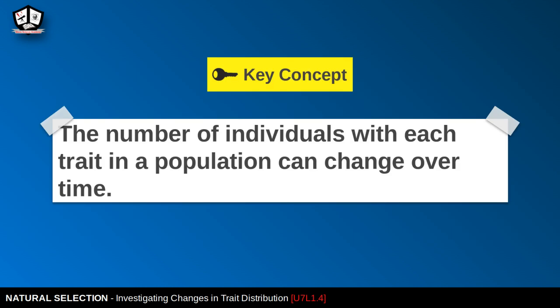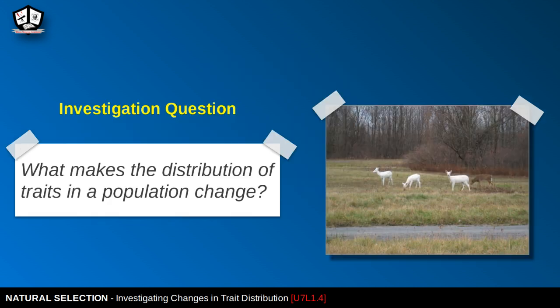The key concept here is that the number of individuals with each trait in a population can change over time. Make sure you take note of that key concept. Here's an investigation question: looking at this image of deer — one brown deer and three white deer — what makes the distribution of traits in a population change?